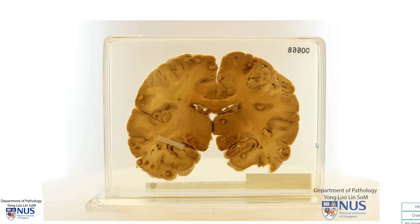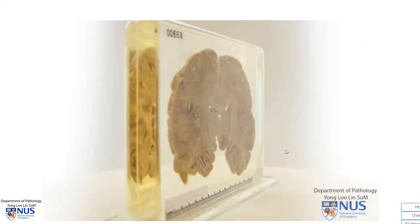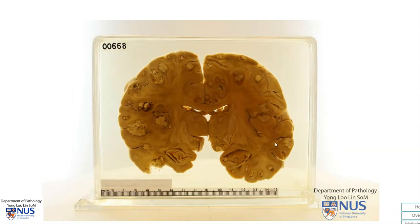In summary, this is a coronal section of the brain showing the presence of multiple masses in both cerebral hemispheres, many of which are located at the gray-white matter junction and many of which show central necrosis. The diagnosis is metastatic carcinoma.